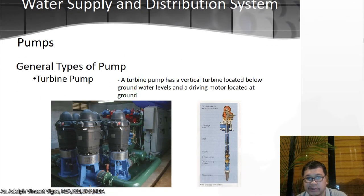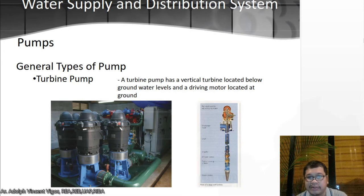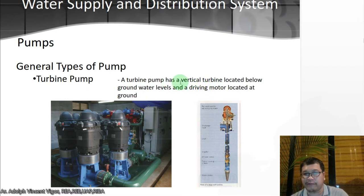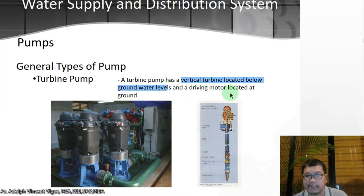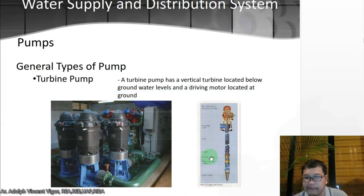Then you have what you call a turbine pump. A turbine pump has a vertical turbine located below ground water levels, with the driving motor located above ground. Take note for your review that it has a vertical turbine below ground water levels and the driving motor located above ground. This is what a turbine pump looks like — this is a sample section of it.